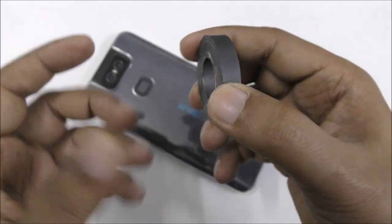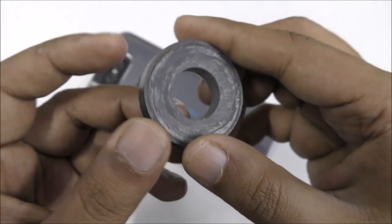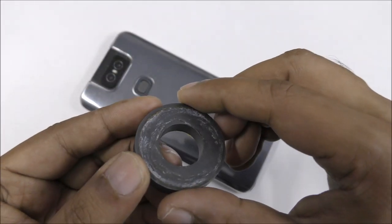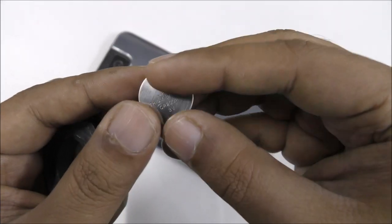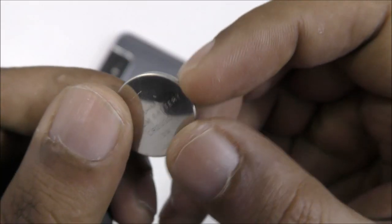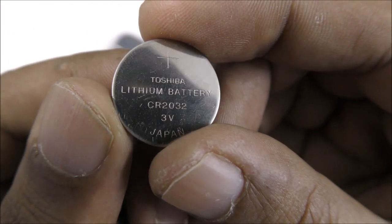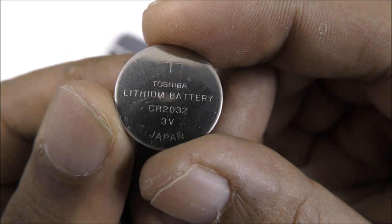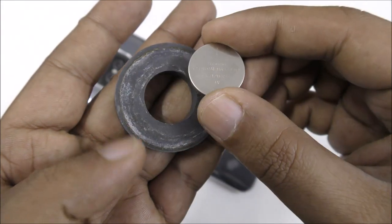This magnet we can use very easily. And we need one battery here - you can see the battery, this model Toshiba lithium battery, CR2032, 3 volt. So what we're going to do is just simply stick the battery to the magnet.